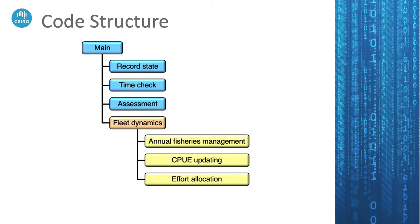The next step is the fleet dynamics. You have to do this before the biology, so all the fishermen are in place so that you can execute the fisheries mortality. The steps involved are: first consider any fisheries management actions that need to take place, particularly on the annual cycle; then there's some catch per unit effort updating, which is used by the socio-economically driven harvest model but also by some simpler harvest models that use CPUE to direct where their activities will be. Then finally you do the actual effort allocation, which in some cases is just spatial fishing mortality, and in other cases is true effort that has to be further interpreted to apply as a mortality rate.